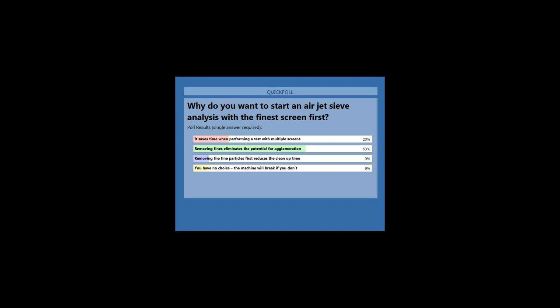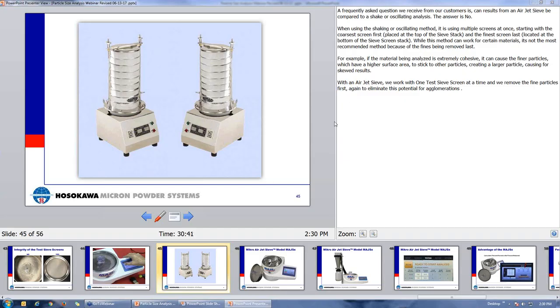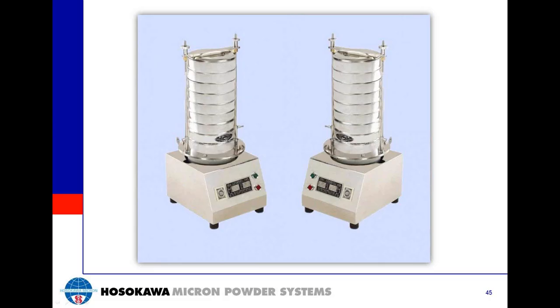A frequently asked question is: can results from the Airjet sieve be compared to a shaking or oscillating analysis? The answer is no. The shaking or oscillating method uses multiple sieve screens at once, starting with the coarsest screen on top and ending with the finest at the bottom. While this method can work for certain materials, it's not the most recommended because the fines are removed last. With the MAJS-X, we work with one test sieve screen at a time and remove the fine particles first, eliminating any potential for agglomerations or cohesion that can produce inaccurate results.